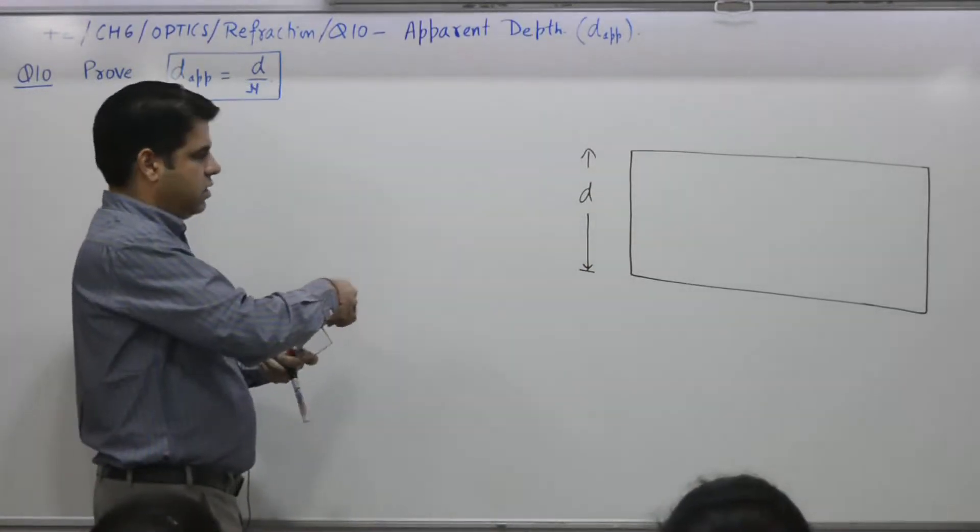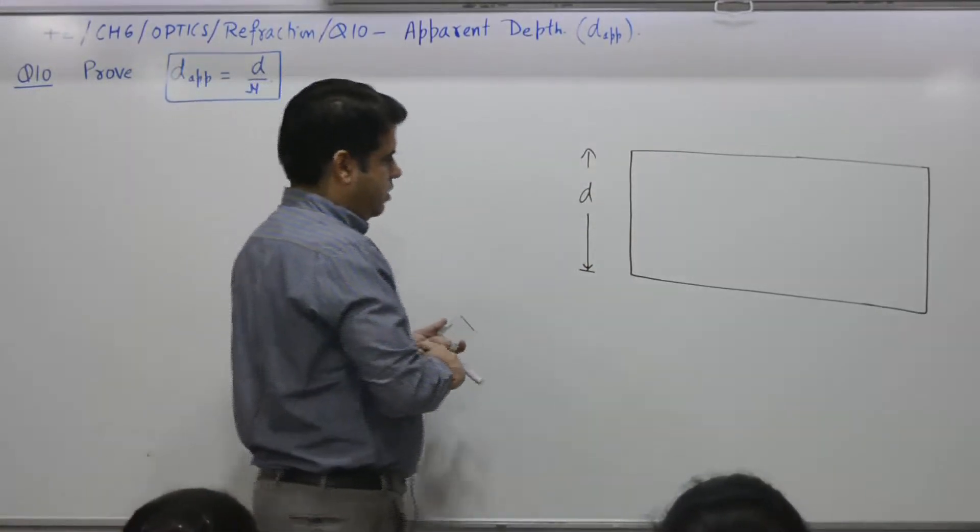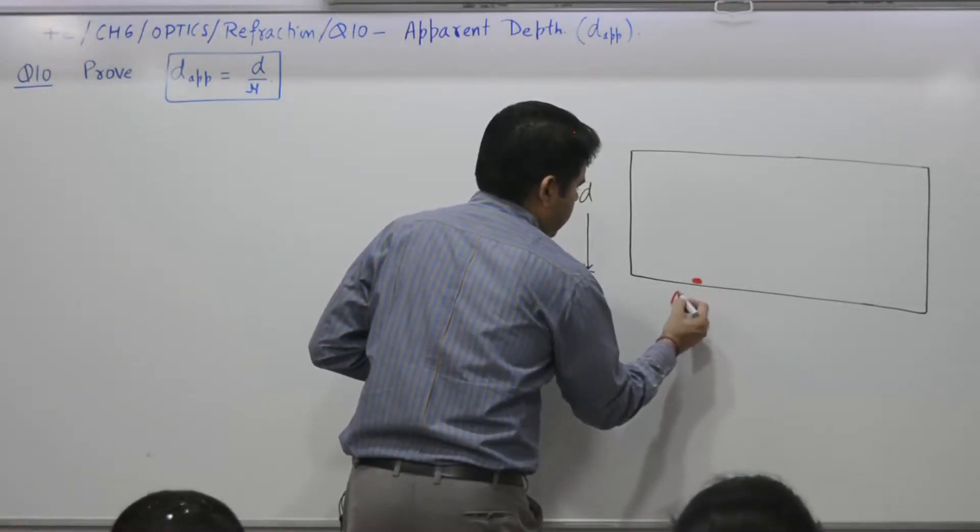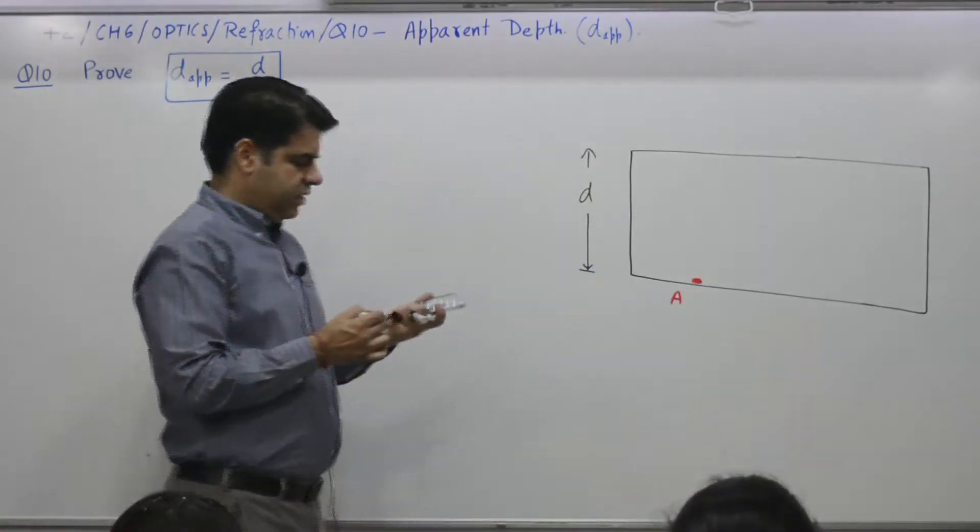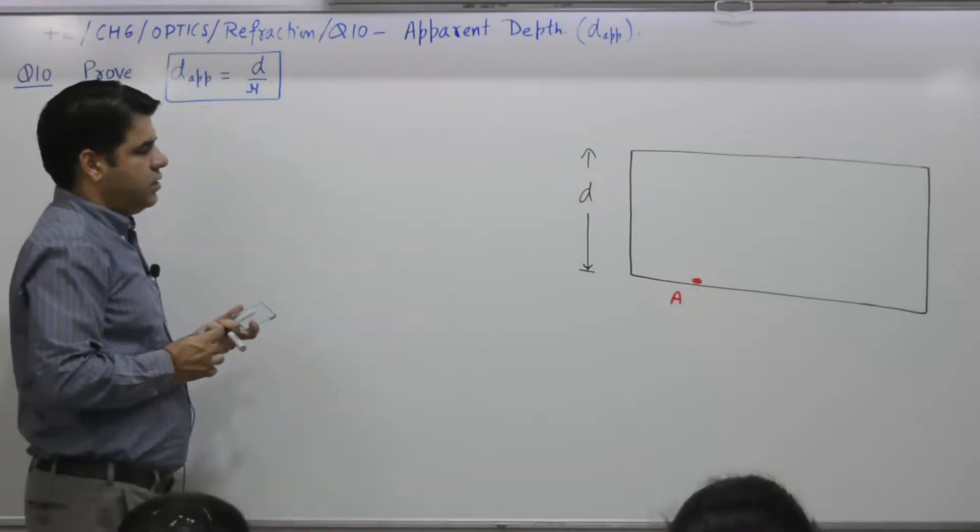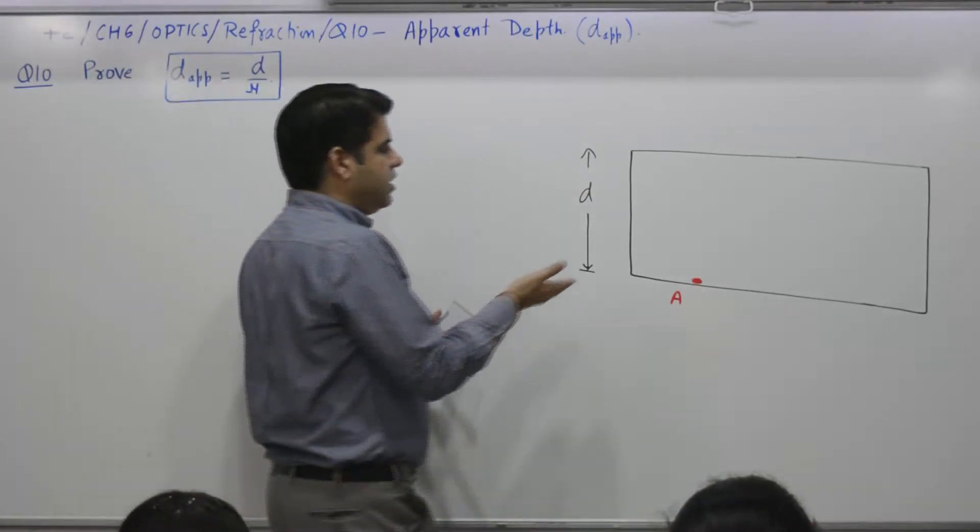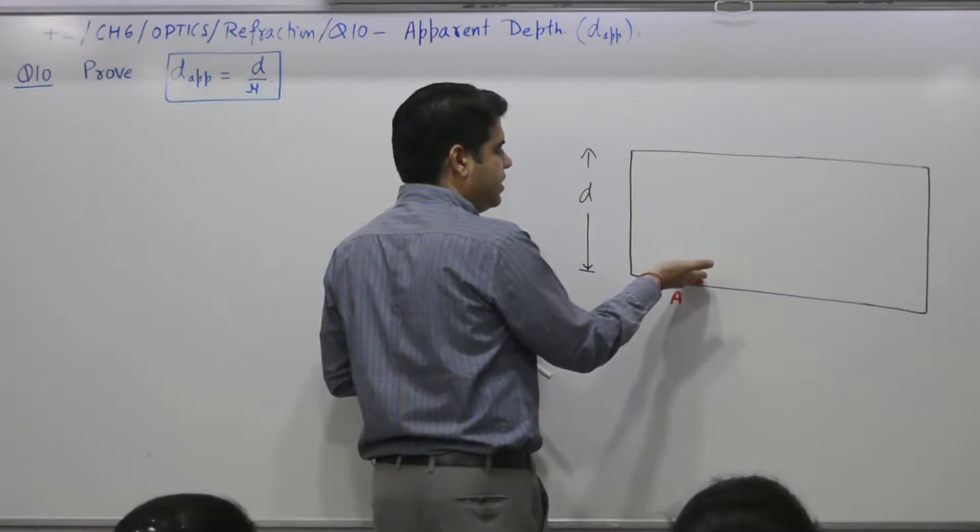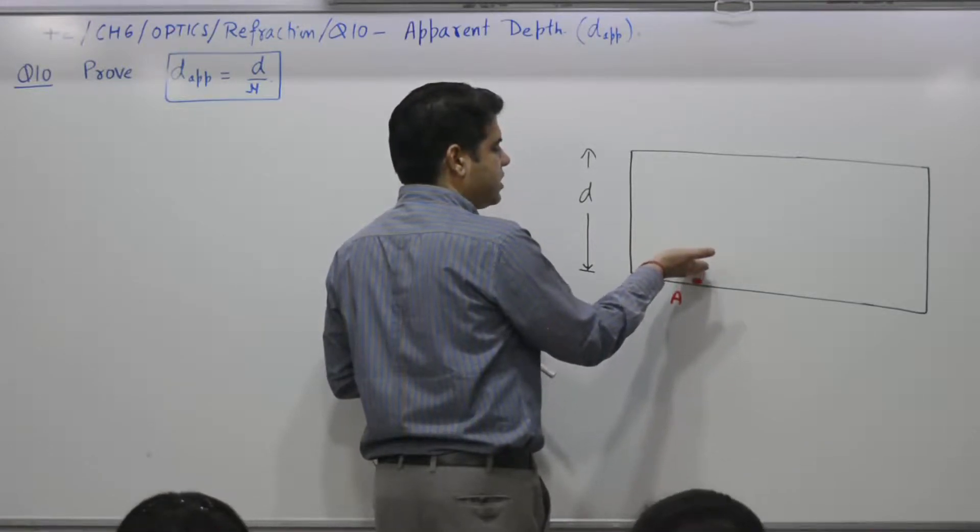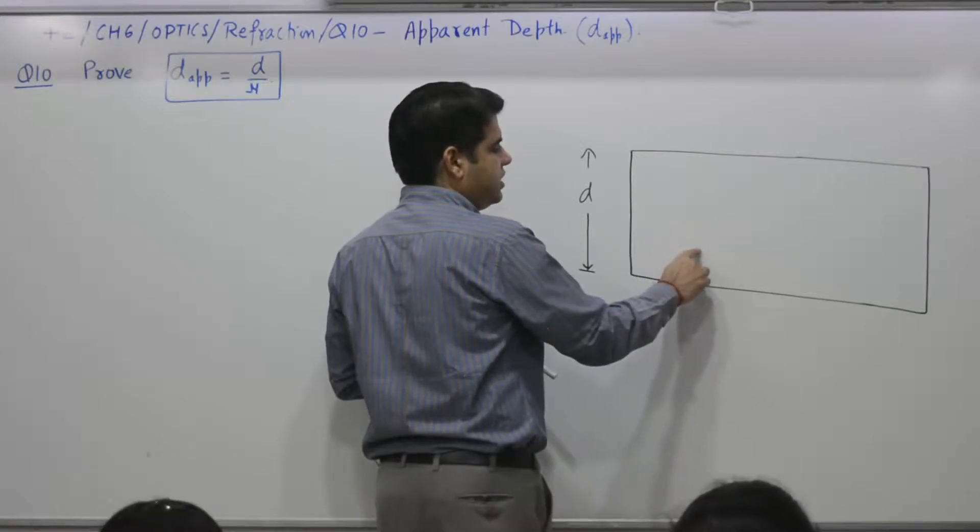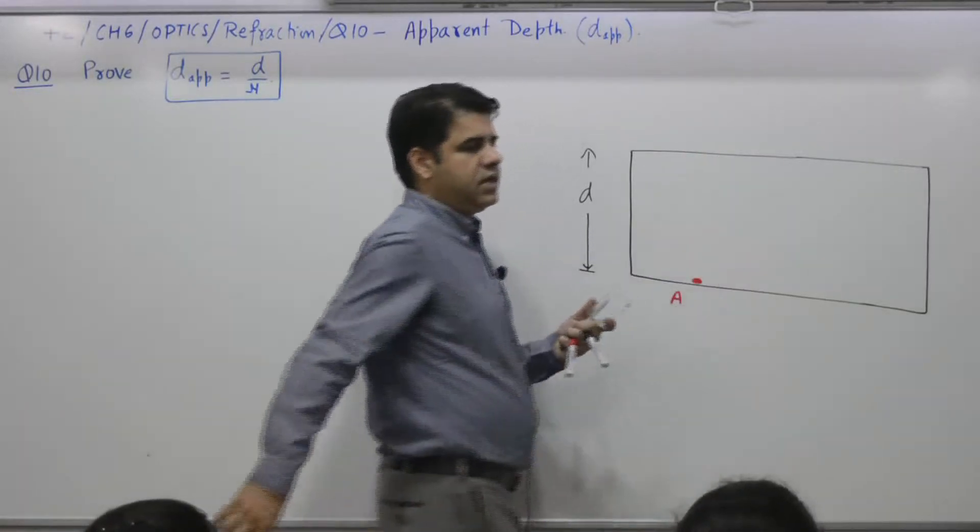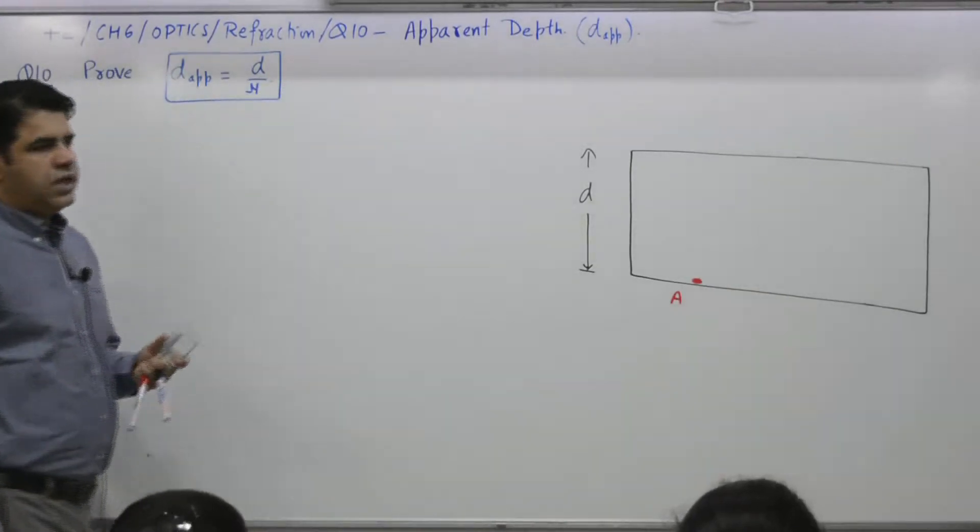Suppose there is an object A lying at a certain depth. It appears, we will see by the ray diagram, it appears to be slightly up. Suppose it is somewhere here, this is apparent depth. One minute to draw the diagram.